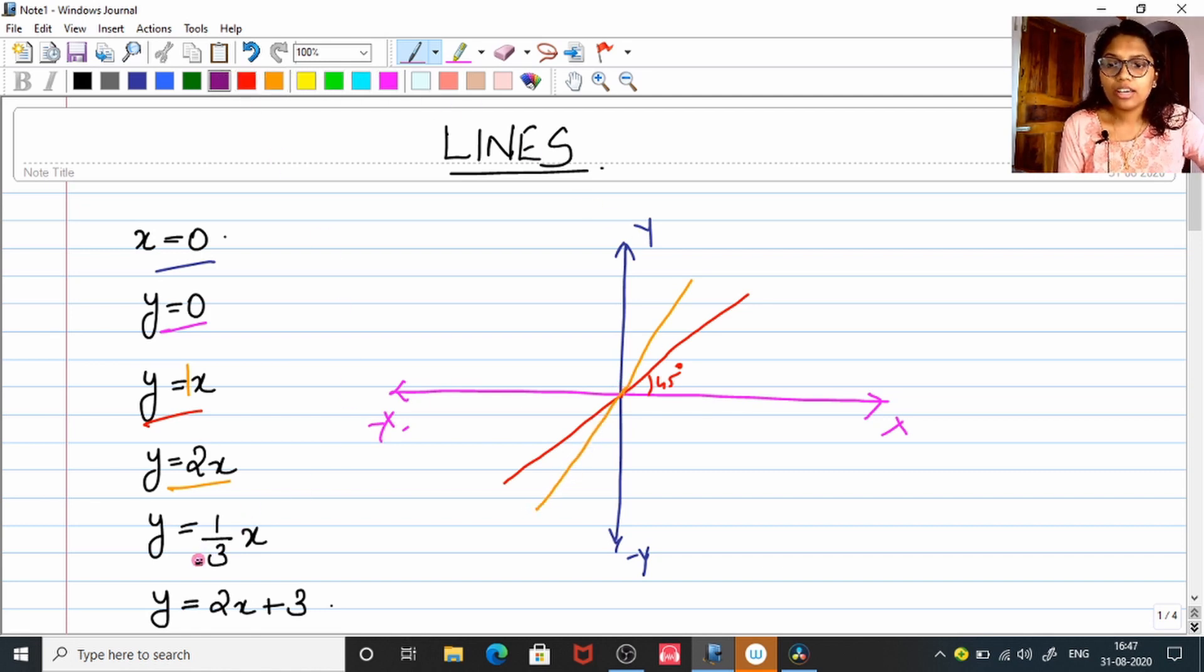Later on, y = (1/3)x where the coefficient is less than 1, so the slope is less compared to the y = x line. Later on in the last equation, y = 2x + 3, which means some number is added to the previous kinds of equation. So here we are having an intercept. Intercept means our line will be crossing the y-axis or x-axis rather than moving through the origin.